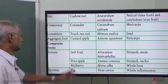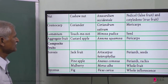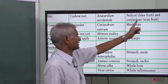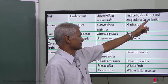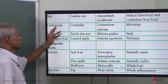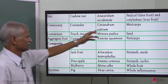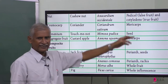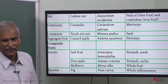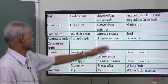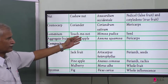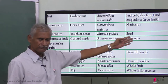Next is nut — cashew nut. The peduncle is the false fruit, and the true fruit is the carpel. For cremocarp — coriander — each unit is called a mericarp, and each one contains a seed, which is edible. For lomentum — touch-me-not plant — the seed is edible.